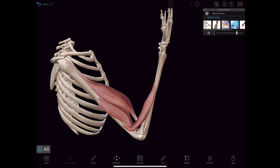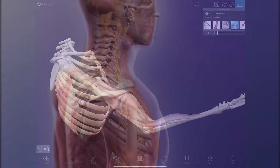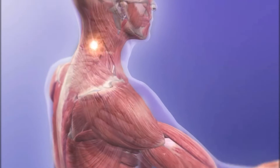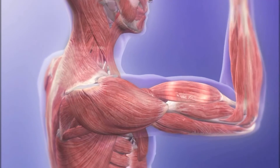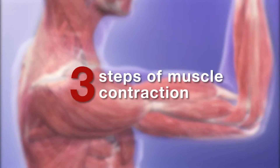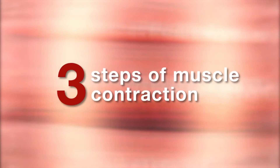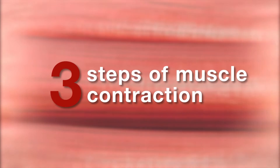Skeletal muscles contract and relax to mechanically move the body. This process is called the mechanism of muscle contraction. There are three steps to this process. Let's go through each one.